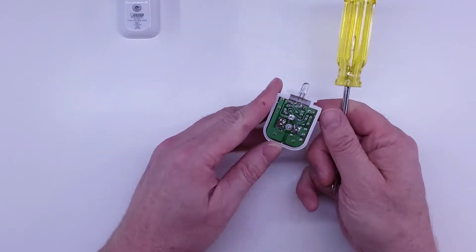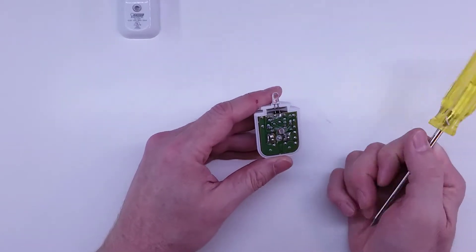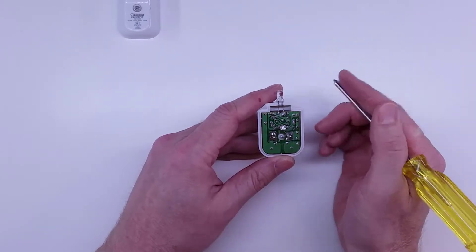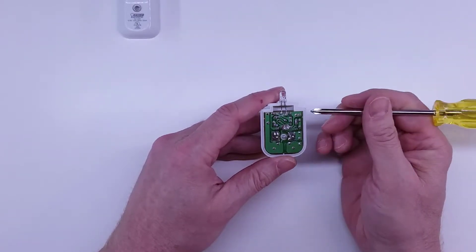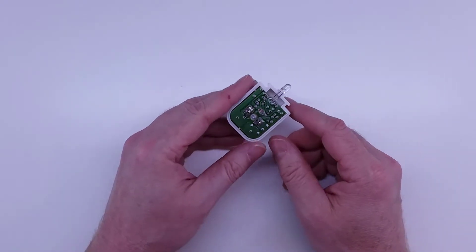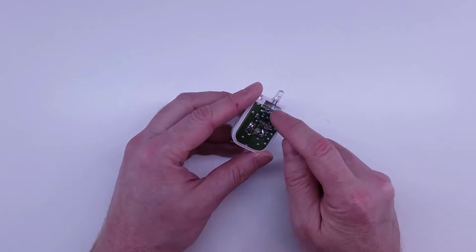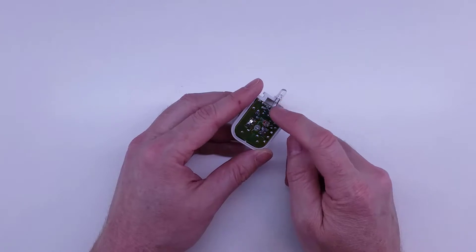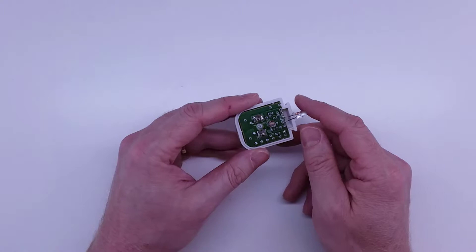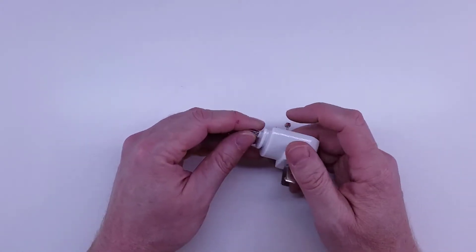The next step is going to be to desolder this LED, clean up the pads, and then put a new LED in along with a resistor. One trick on getting the old LED out is you're gonna want to reflow in some fresh solder. Heat this up and add some additional solder. These old solder joints are gonna be really hard to come apart if you don't do that. A little fresh solder will make a huge difference.